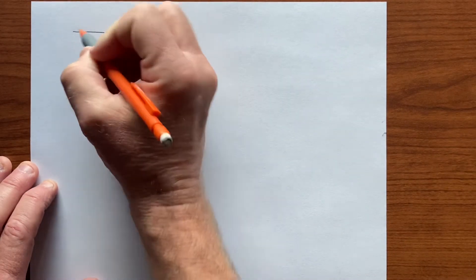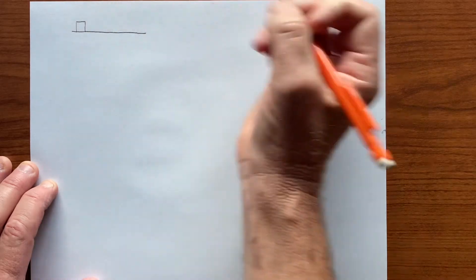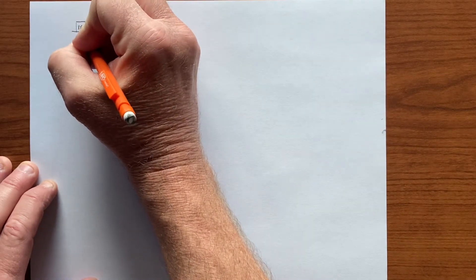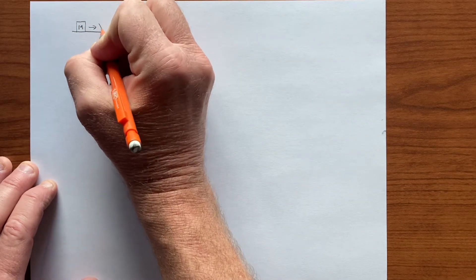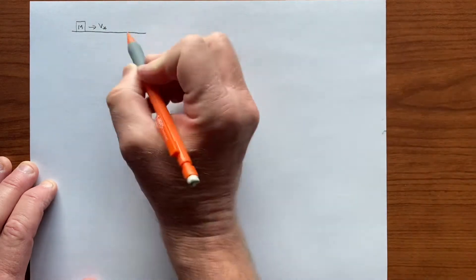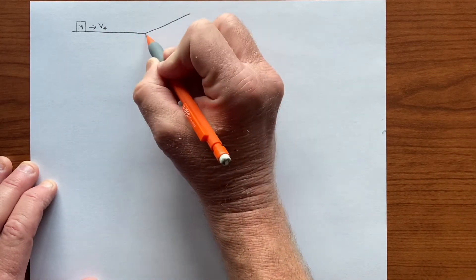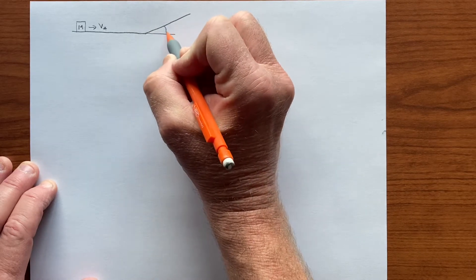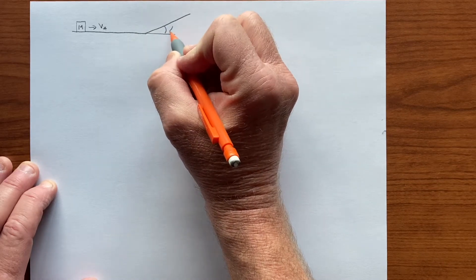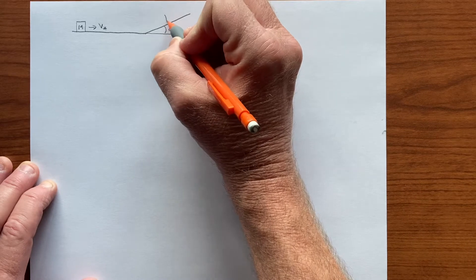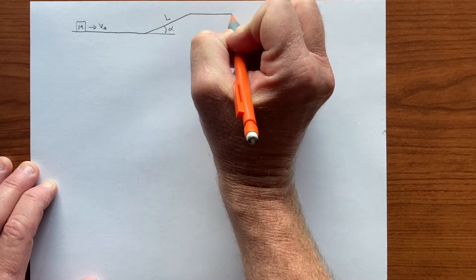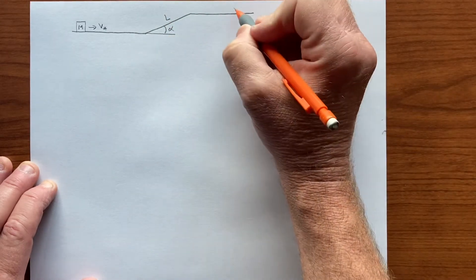So let's say we have an object of mass M and we launch it with speed V star on a horizontal surface and then it goes up an inclined plane. The angle here is alpha and the length is L, and then it comes up onto a surface where